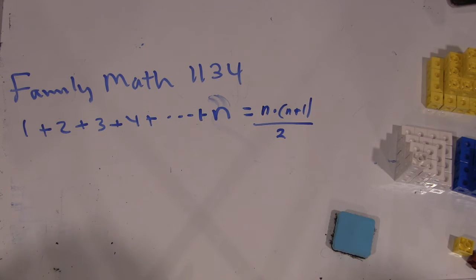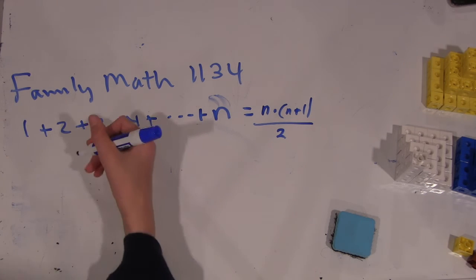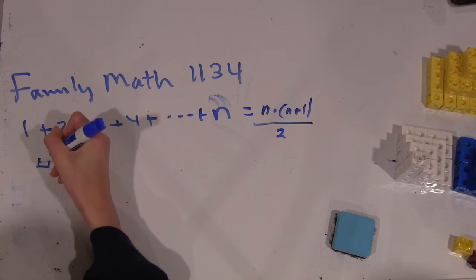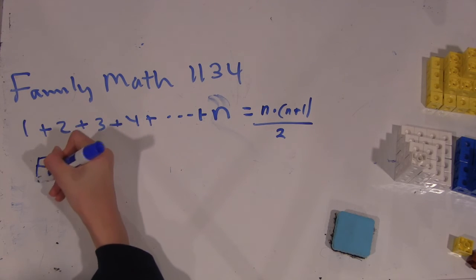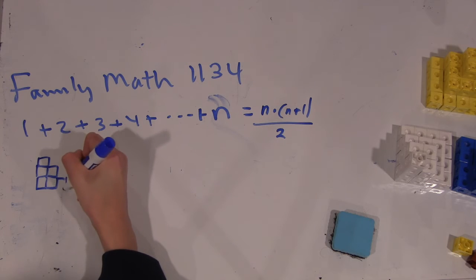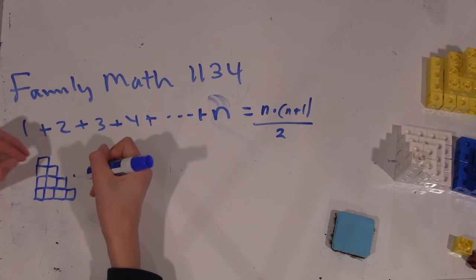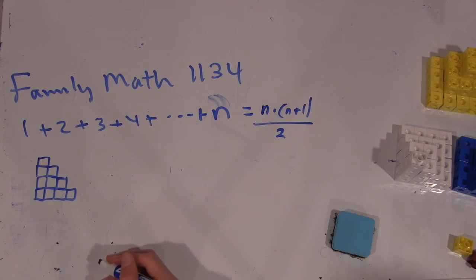Do you have any sense of how we might prove that this formula is true for a general n? Well, we could use sort of a geometrical proof that I think I've seen before. So what you do is for however large your n is, you represent each number as this block, one of these blocks. So you have 1, 2, 3, and 4. And you duplicate that.